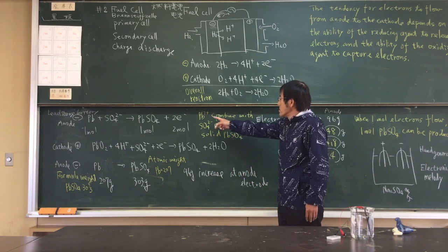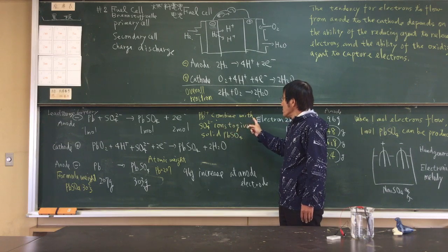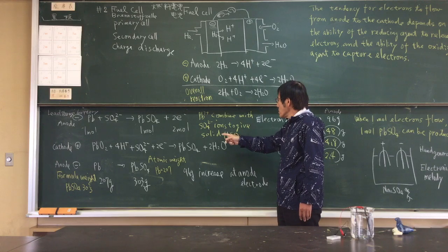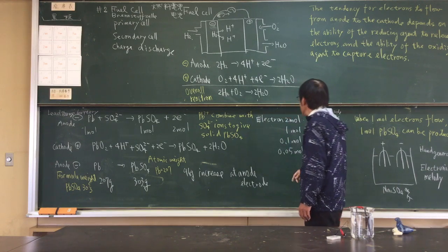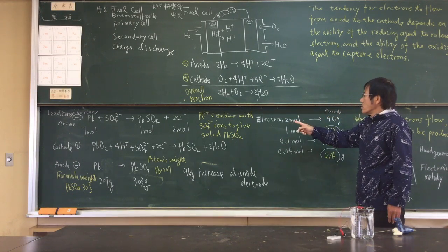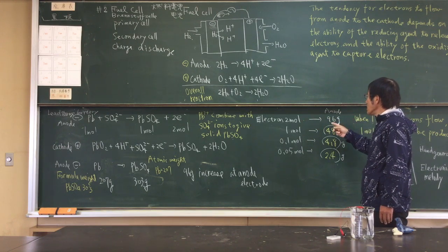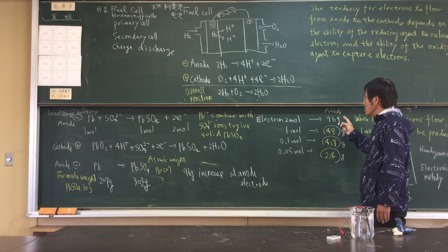Lead ion combines with sulfate to give solid lead sulfate. If 2 molar electrons flow, at the anode, 96 grams increase.